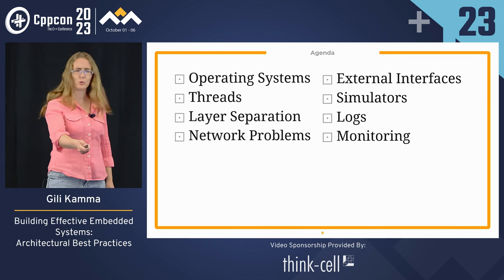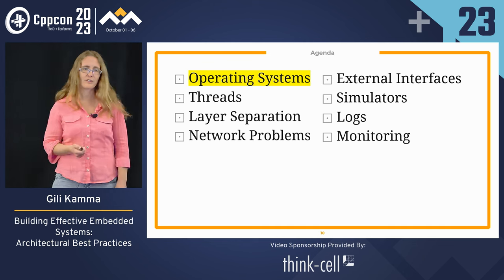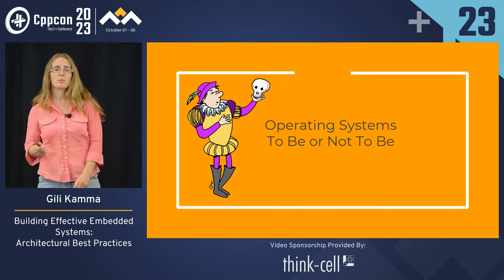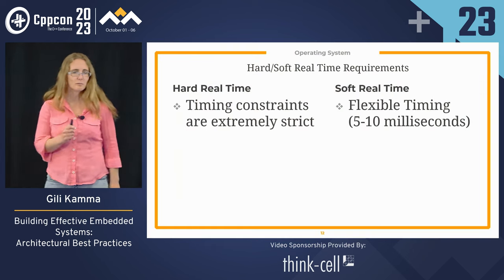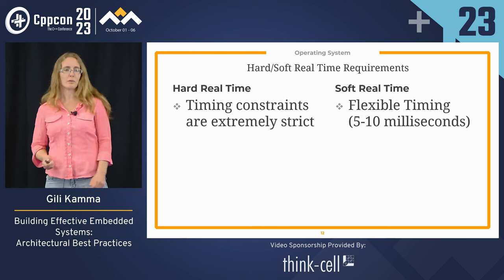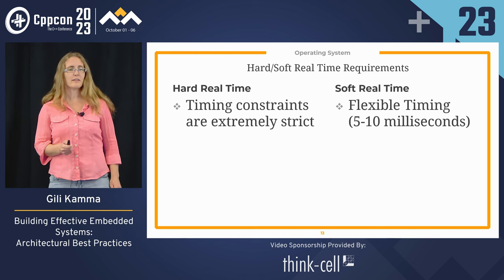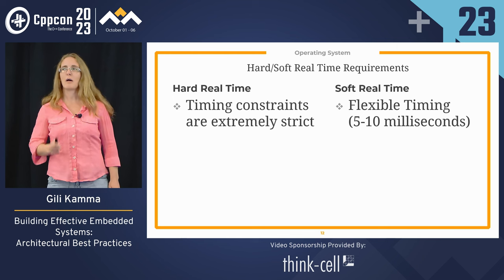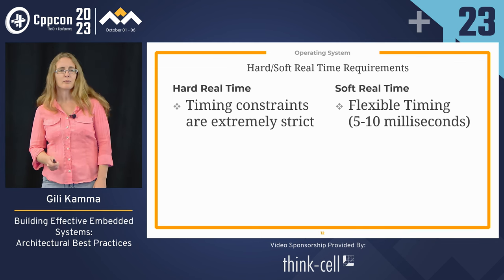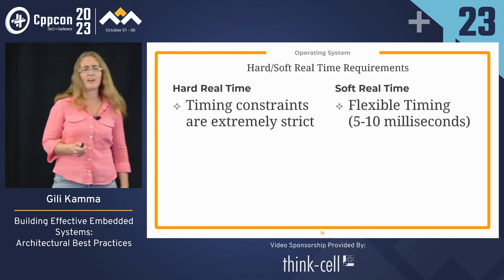This is the agenda for today — it's pretty long, so let's start. First, operating systems: to be or not to be? I would like to speak about soft real-time requirements. In hard real-time, timing constraints are extremely strict — something needs to happen every 10 microseconds. In soft real-time, timing is more flexible — five to ten milliseconds is fine, sometimes a little bit more.